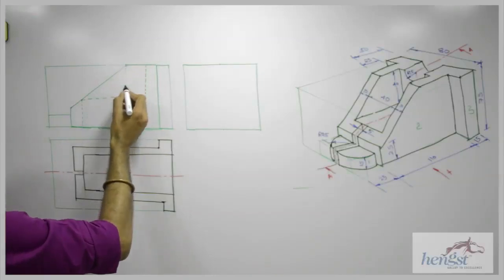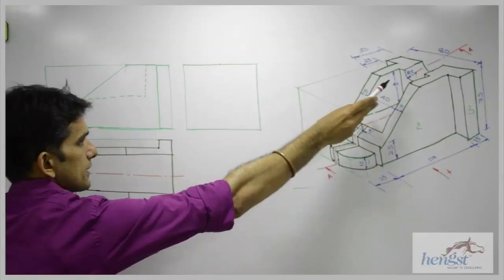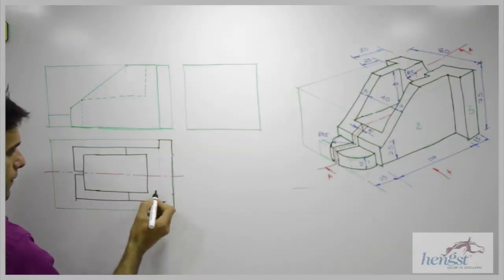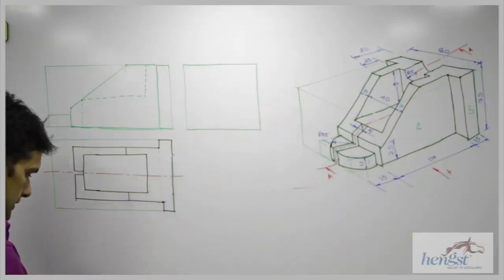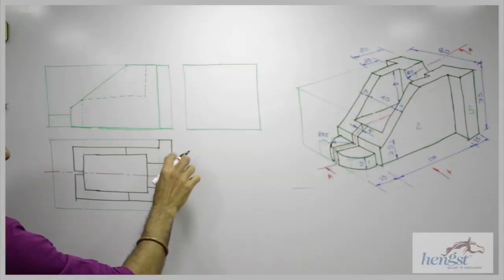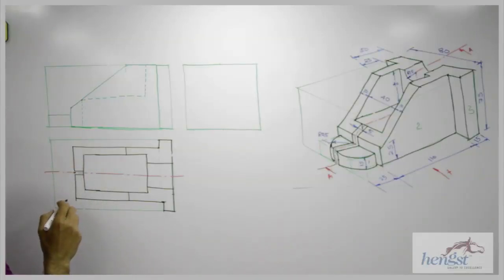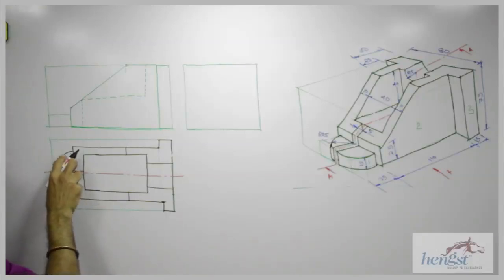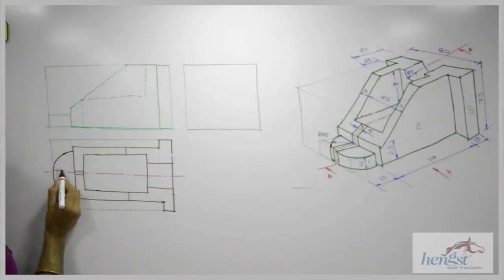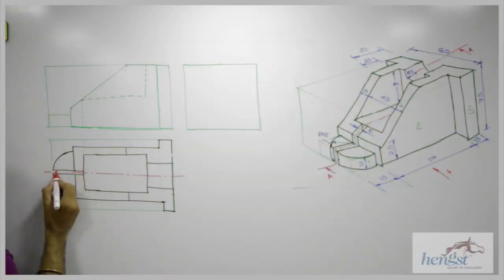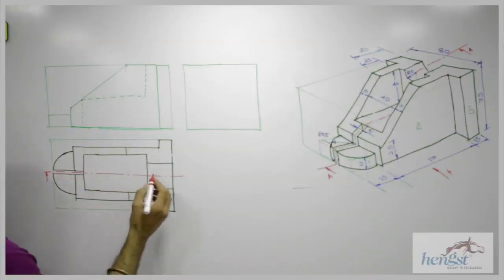That we can project from here. Then we have this internal part also — this line won't be there. They have given radius 15, so you take 15 on both the sides. So it will be like this. This is the top view. Now we need to draw radius 25 — from here we can draw radius 25. And this slot is continuous. Here also there won't be any material. You can show this cutting plane line AA.